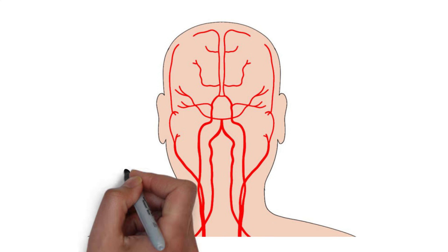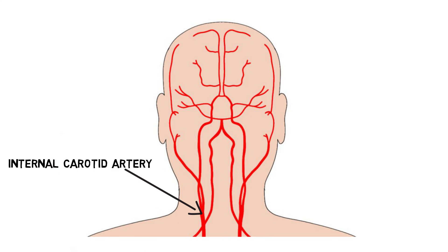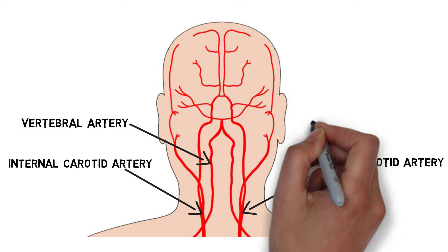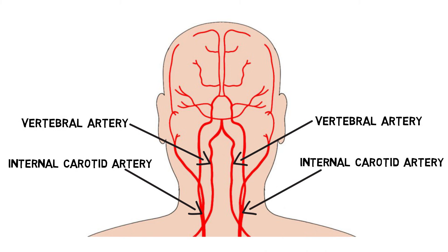The internal carotid arteries supply the brain with about 80% of its blood, while the vertebral arteries contribute the remaining 20%.